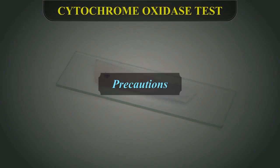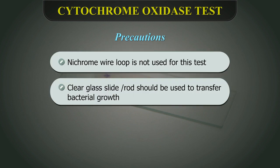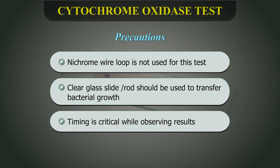Precautions while performing the oxidase test: Nichrome wire loops should never be used for this test, as surface oxidation products formed while flaming the loop can give false positive results. Timing is critical while observing results. Any organism giving a positive result after 10 seconds should not be considered positive and should be tested further.